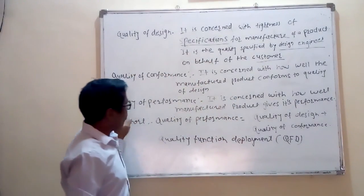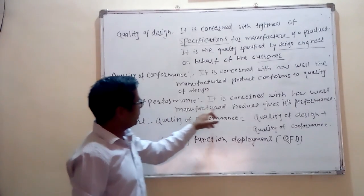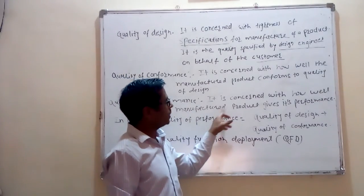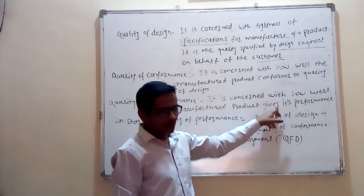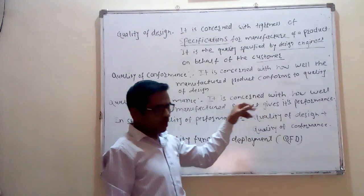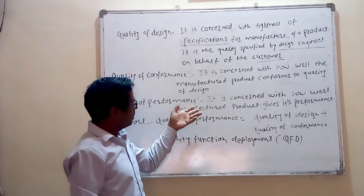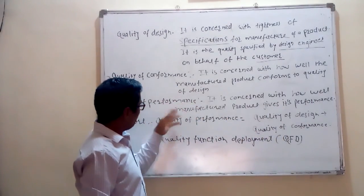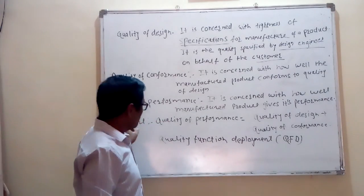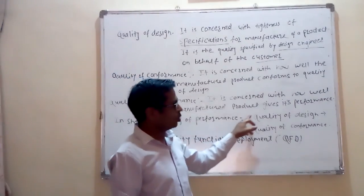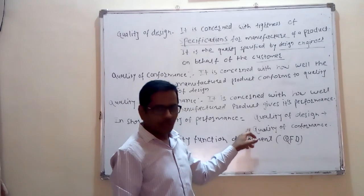The third term is quality of performance. It is concerned with how well the manufactured product achieves its performance — how the product is performing in the field. That is quality of performance. In short, quality of performance is equal to quality of design plus quality of conformance.